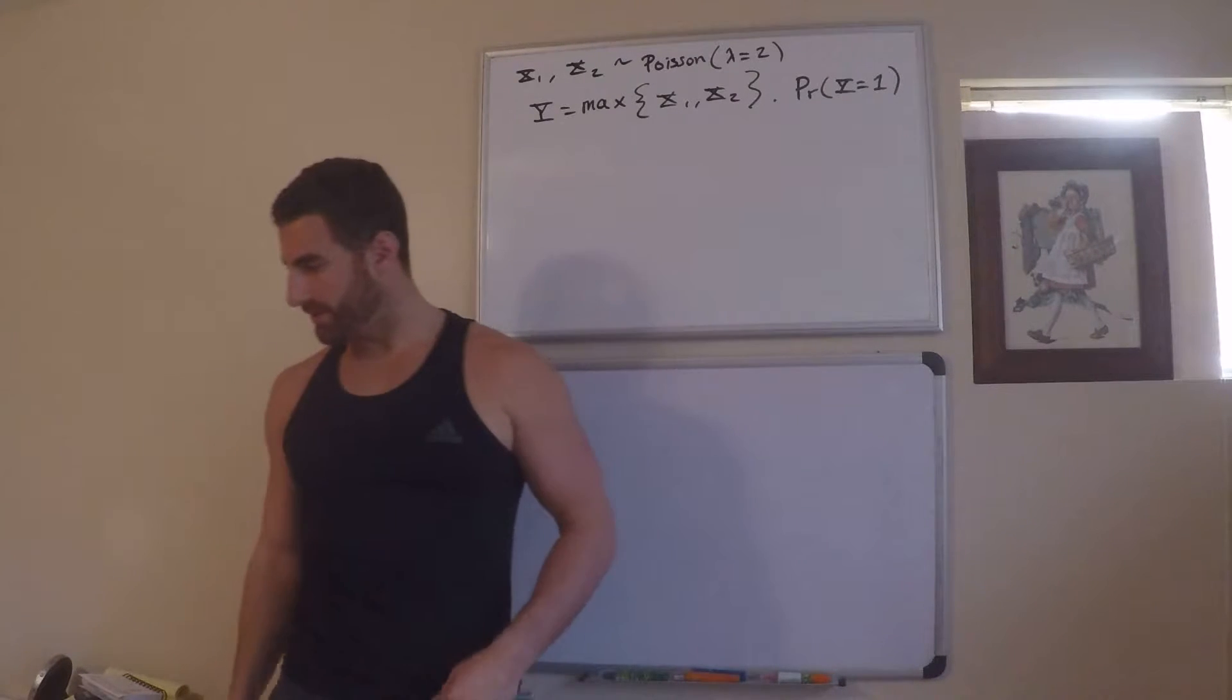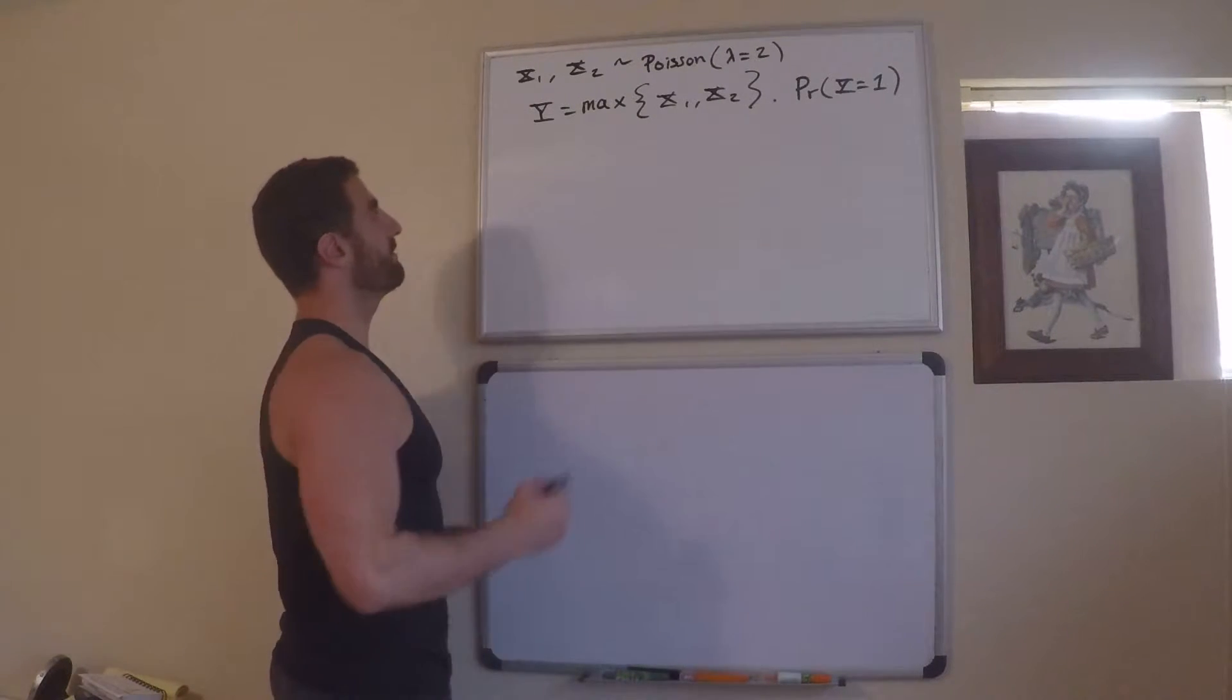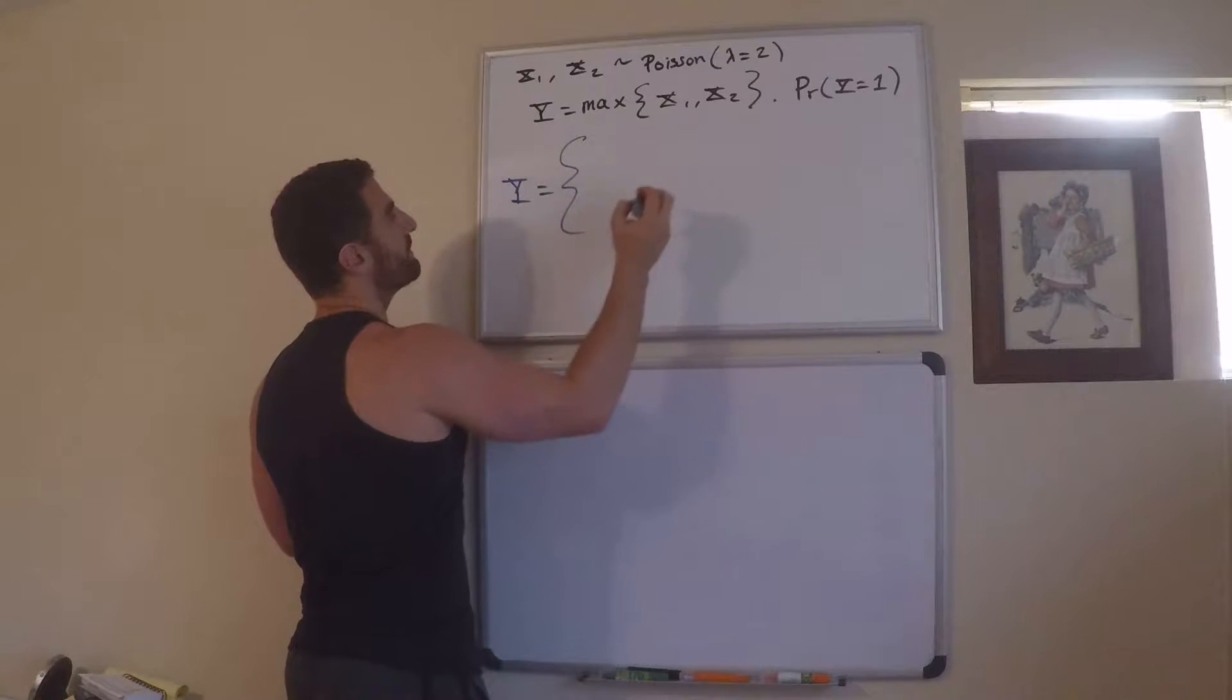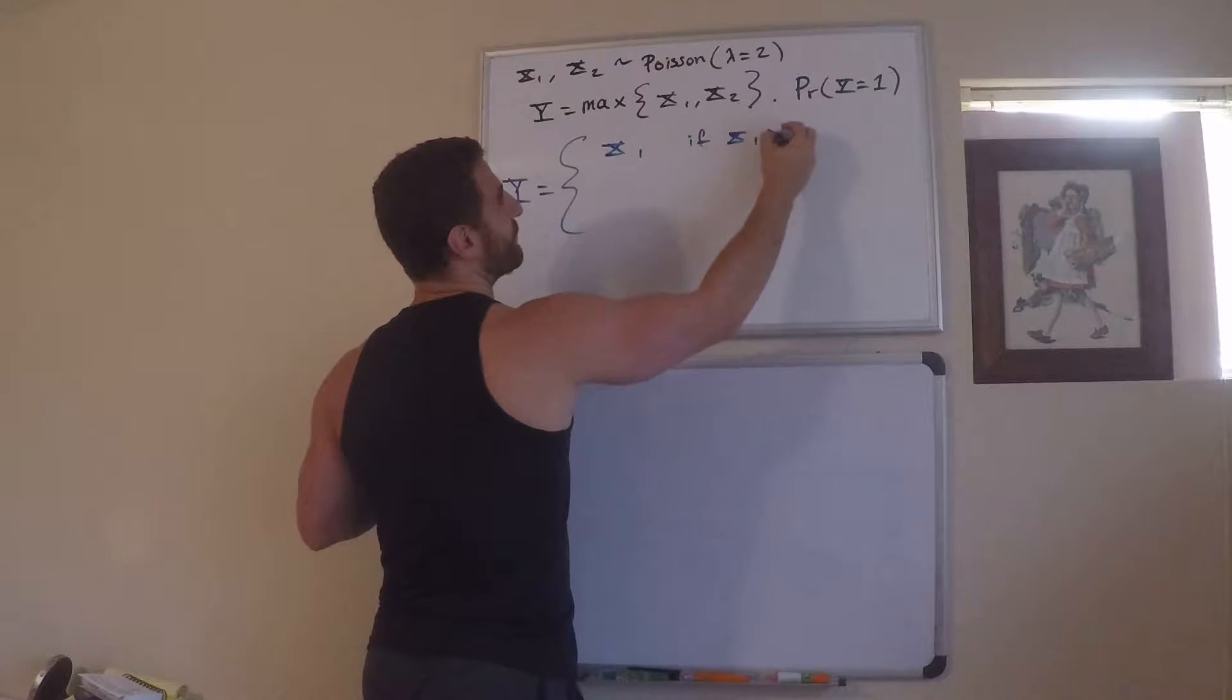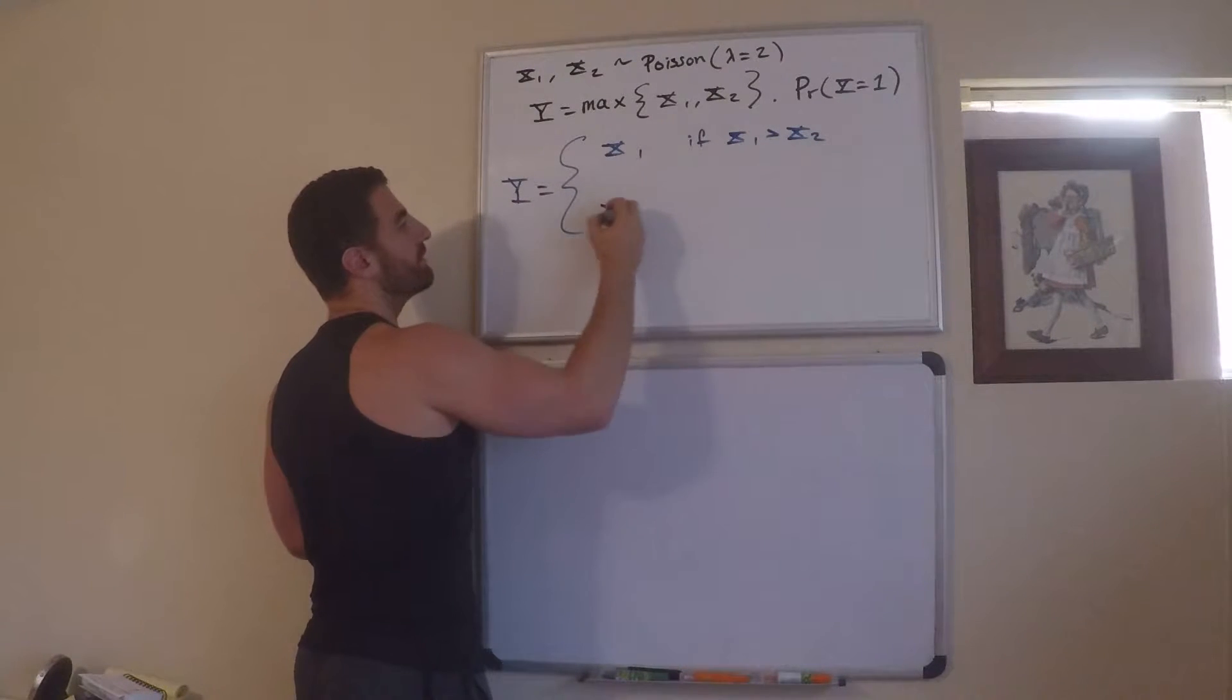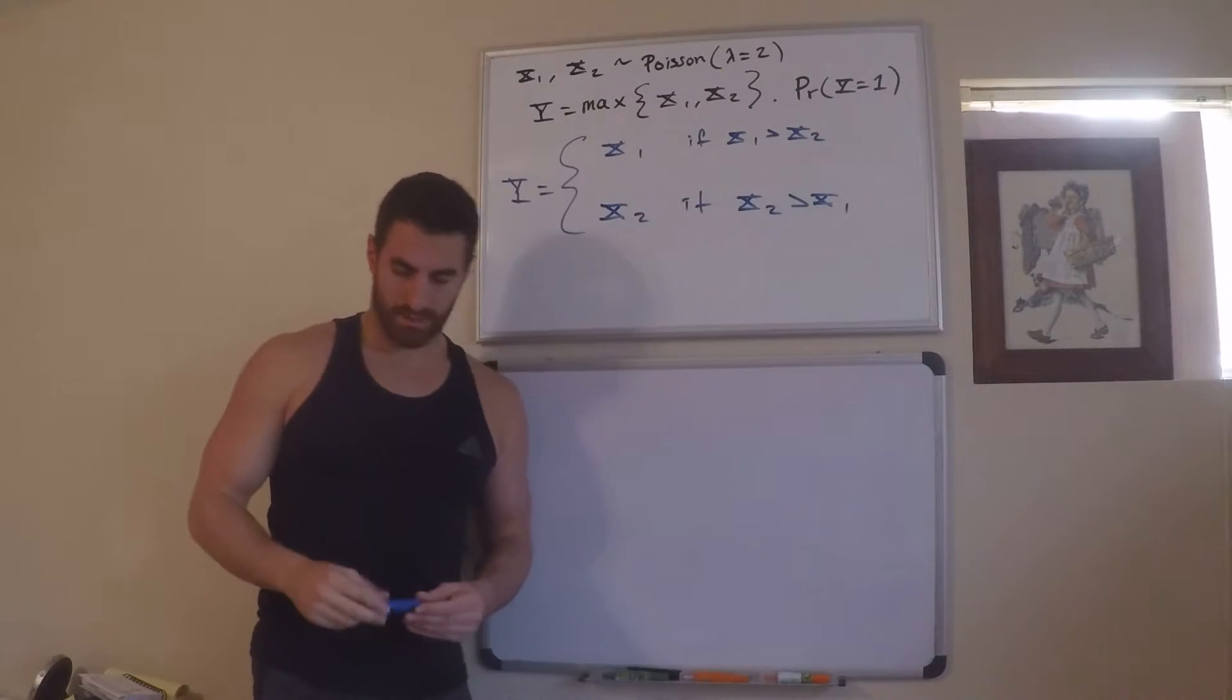So what I usually do in this situation whenever I have a max or min problem is I kind of just write out what's going on with this value of the random variable y. So what I mean is that y, what is y equal to? Well, y is equal to x1 if x1 is greater than x2, or y is equal to x2 if x2 is greater than x1.